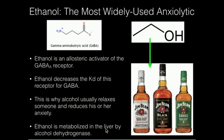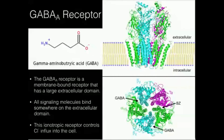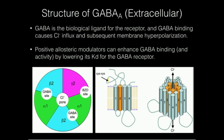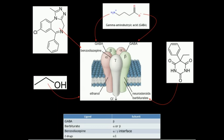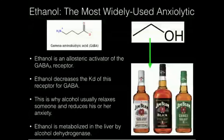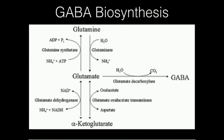Hopefully this gave you some useful knowledge relating to the GABA-A receptor and its function, and some of the positive allosteric modulators that commonly provide pharmacological effects. In the next video we're going to go over GABA metabolism — its synthesis and then its degradation. See you in the next video.